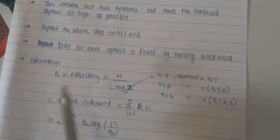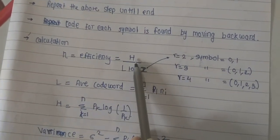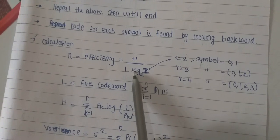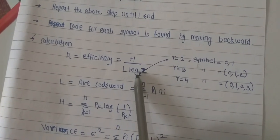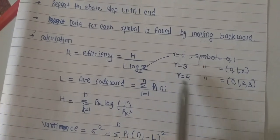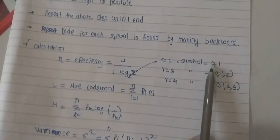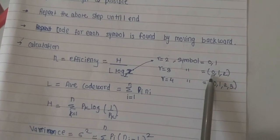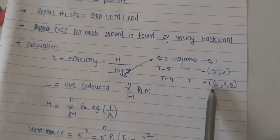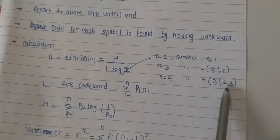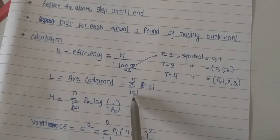In Huffman coding you calculate efficiency as H divided by L-bar times log base 2 of r. If r equals 2, use symbols 0 and 1. If r equals 3, use symbols 0, 1, and 2. If r equals 4, use symbols 0, 1, 2, and 3.